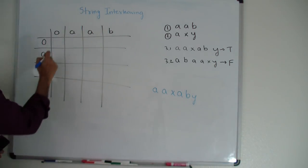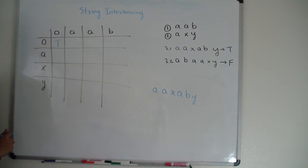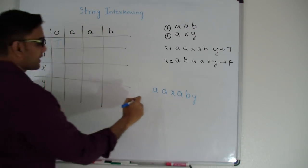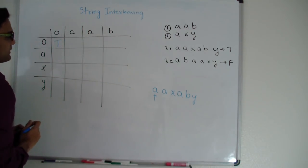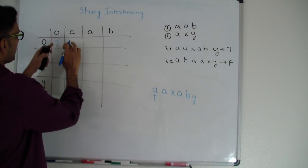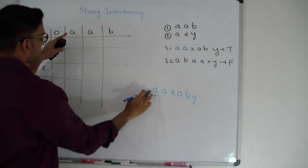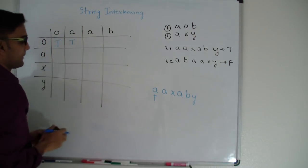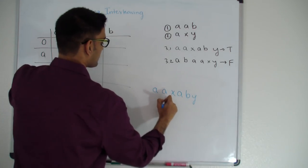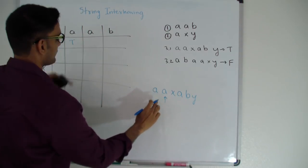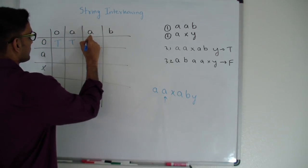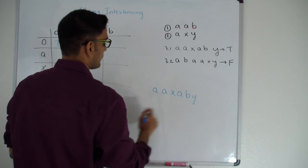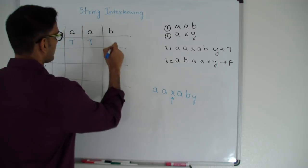Zero-zero is true. Let's fill up the zeroth row. When I'm looking at 'a', I'm comparing this 'a' with this 'a'. If both of them are the same, I'm saying it is true if the value to the left of me is true. Since they are the same and the left is true, this is true. Similarly the second 'a' matches and the left value is true, so that is also true. But 'x' is different from 'b', so this is directly false.